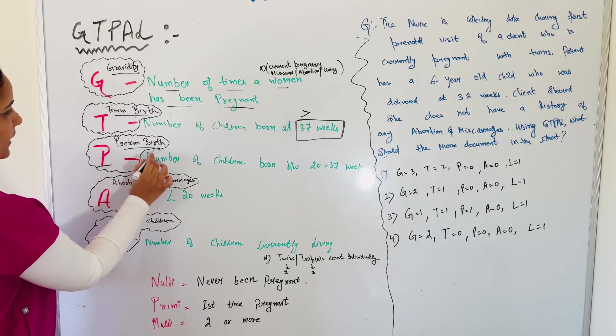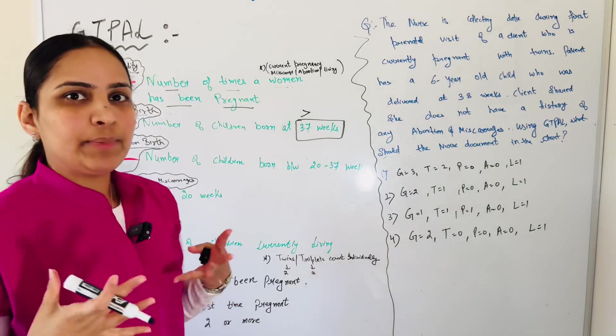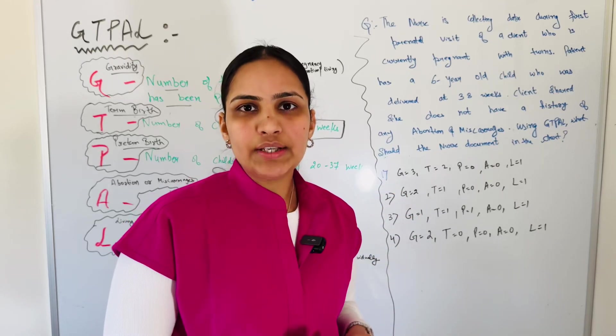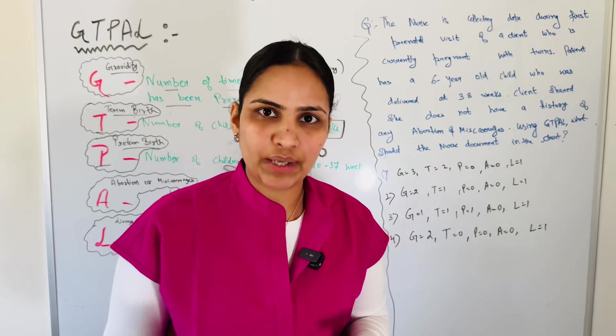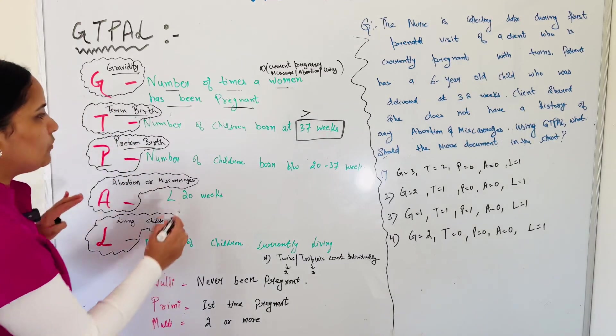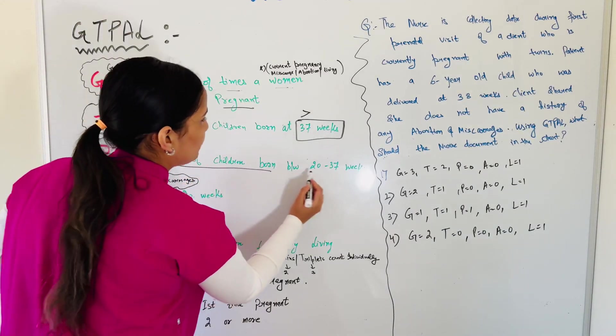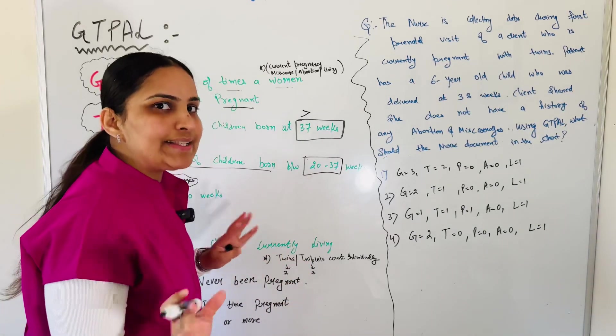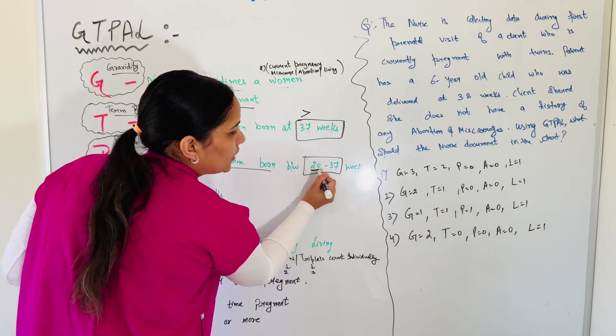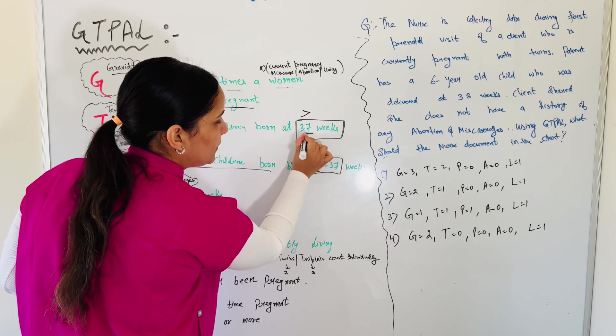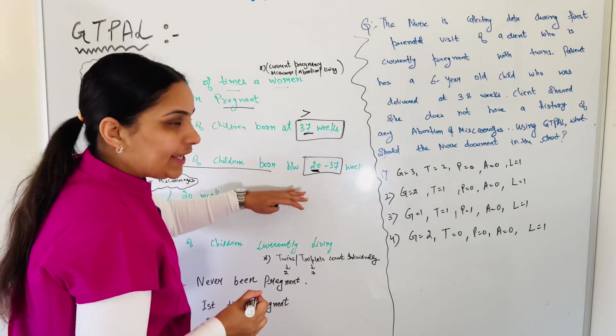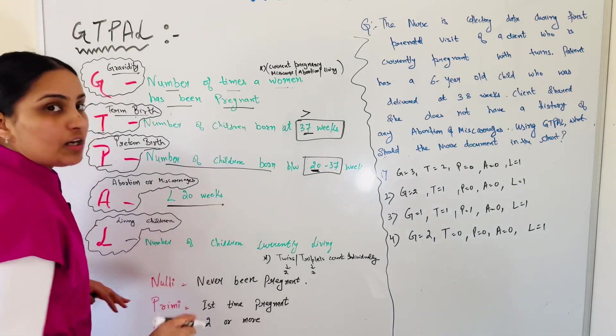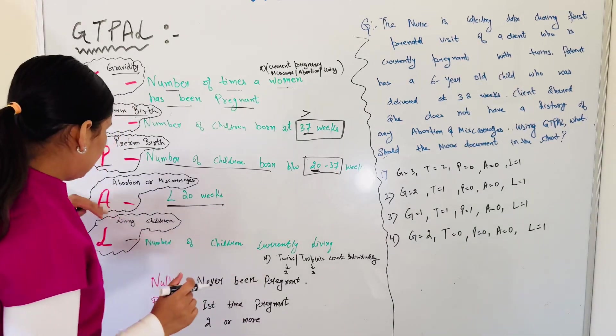P is preterm birth. Preterm birth, we know that if the baby is born before 37 weeks, we call it preterm baby. So P means preterm, which means number of children born between 20 to 37 weeks. Before 20, that will be abortion or miscarriage. Less than 20, abortion or miscarriage, which is A.